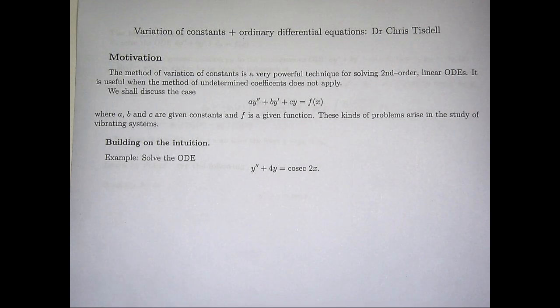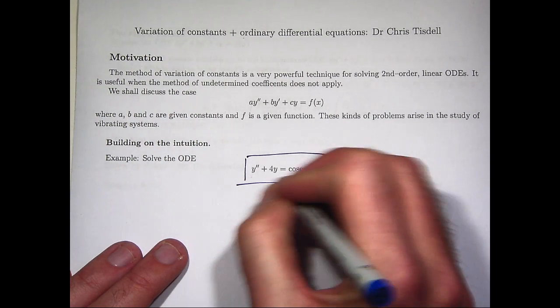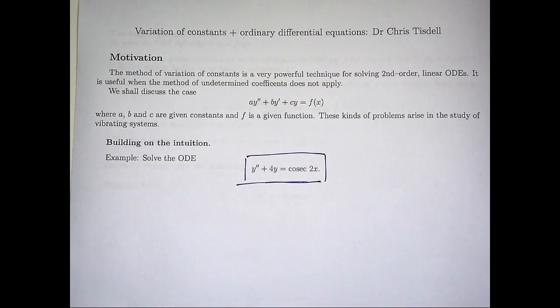So let's have a look at the following problem: y'' + 4y = cosec(2x). We want to solve for the unknown function y, and it's a two-step process.